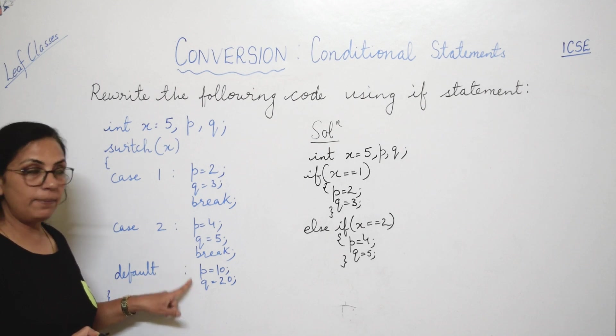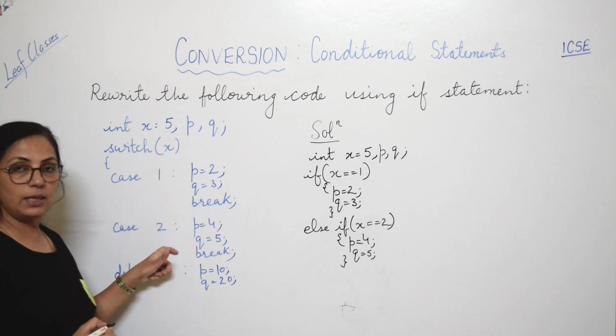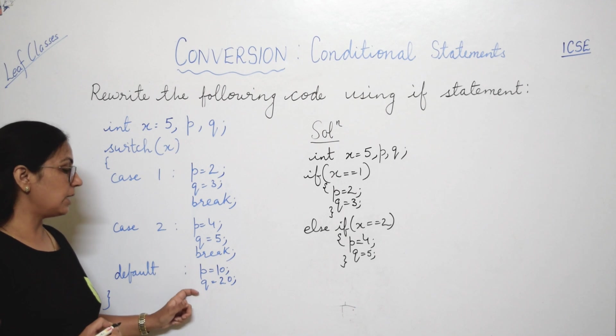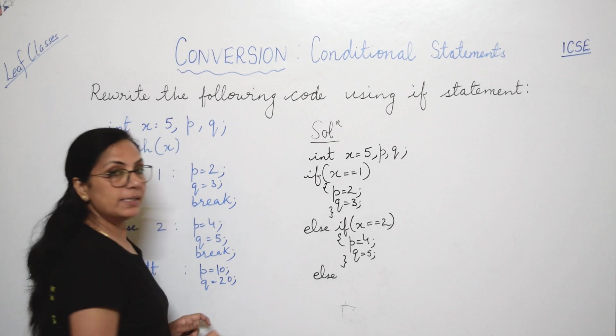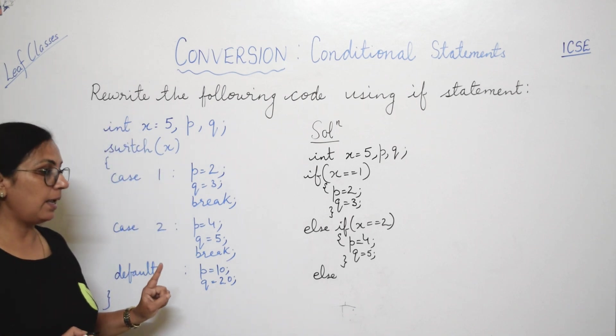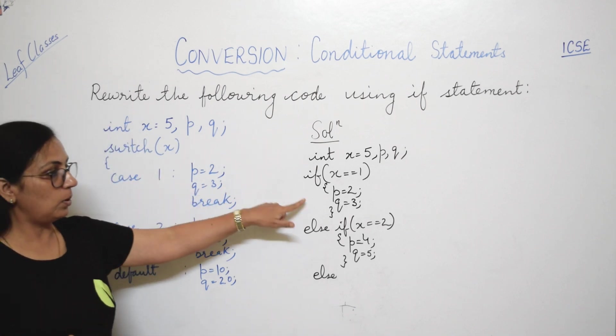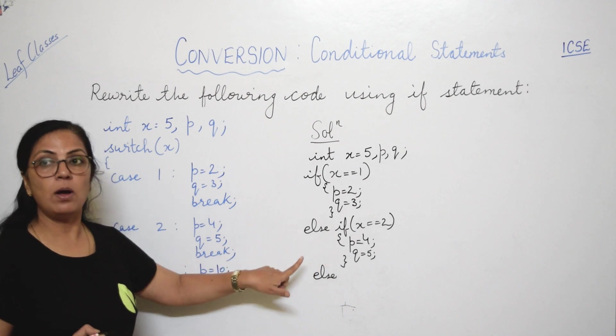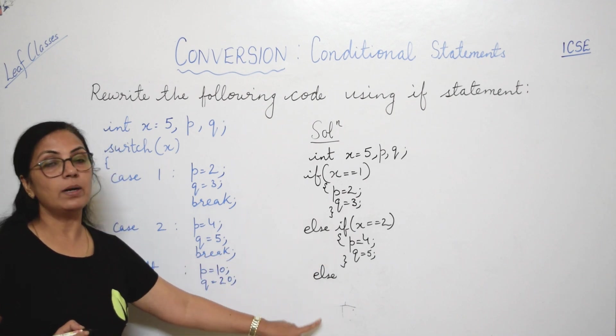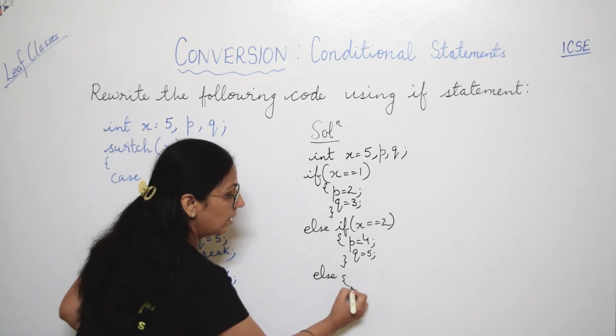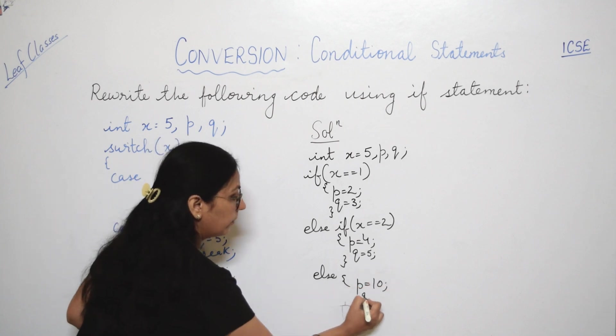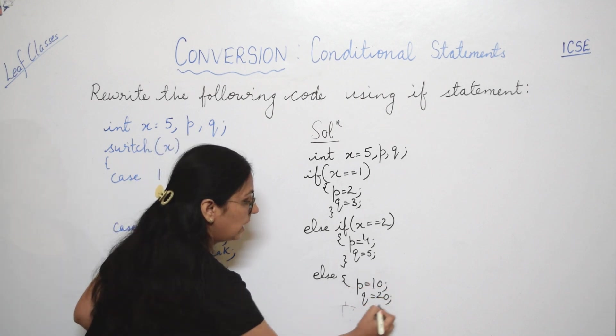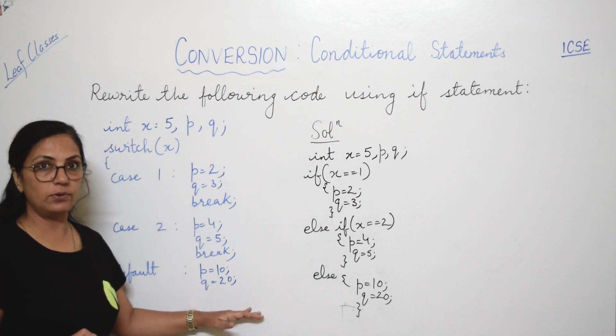Agar two statements are there. P equals to 4 and q equals to 5, closing braces. Then we have default. Default ka matlab ki agar none of the matching case is found, then the statement written after default will be executed. Toh yahaan par hum denge else, aur else ke saath koi bhi condition nahi likhenge. Because agar one hai toh ye karo, two hai toh ye karo. Otherwise do what is written in else block. Else, again here two statements are there. So you will write p equals to 10, q equals to 20 here, right children? I hope it is clear to all of you.